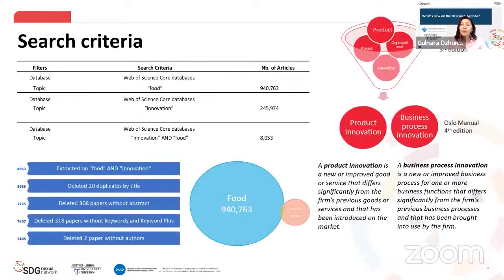We interrogated the Web of Science database by the topic 'food,' which allowed us to identify 940,000 papers, and by the topic 'innovation' with 245,000 papers. Given the large number of articles, for further analysis we used both keywords at the same time, establishing a sample of 8,053 papers. After data cleaning steps, we got 7,405 papers for this study.